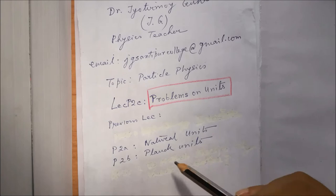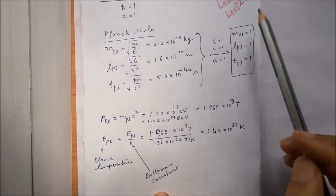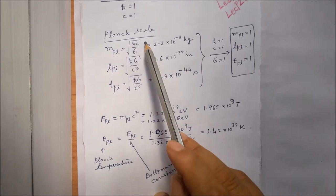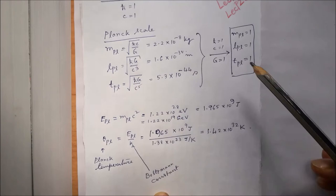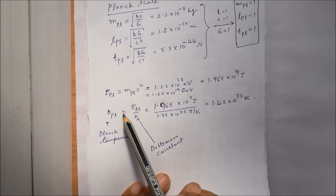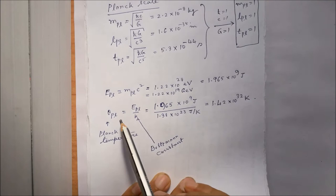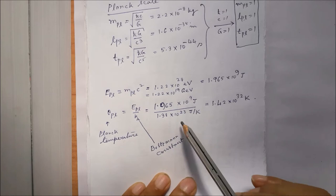In lecture P2B we discussed about Planck units. The natural units corresponded to h-cross equal to 1 and c equal to 1. As discussed in lecture P2B, Planck scale was all about building combinations of fundamental constants known as Planck mass, Planck length, Planck time, and in Planck scale it is convenient to put them equal to 1 and do some calculations. We also defined Planck energy which is m_pl times c-squared, whose value in GeV is of this amount.